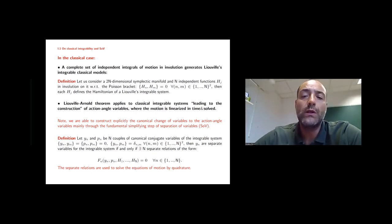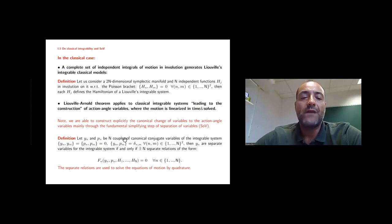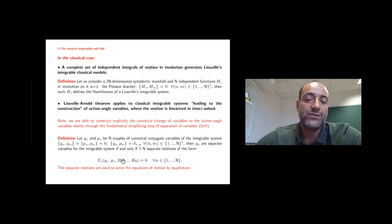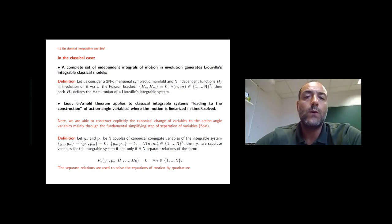To actually solve these models we need something more in practice, and in general this is the separation of variables. The definition of separation of variables for these models means that we have n couples of canonical conjugate variables for which we have n separate relations. A separate relation is a relation which involves just one couple of canonical conjugate variables and the conserved charges. This is used to solve the equations of motion because it is used to construct the canonical transformation from the original variables to the action-angle variables. This is for the classical case.